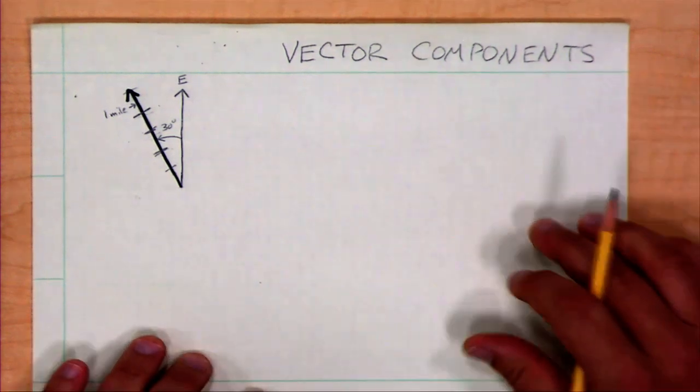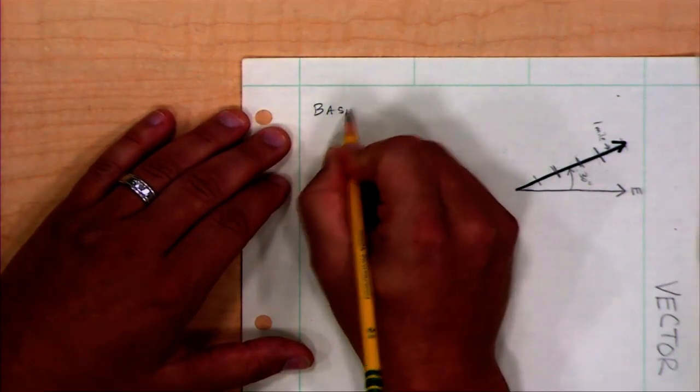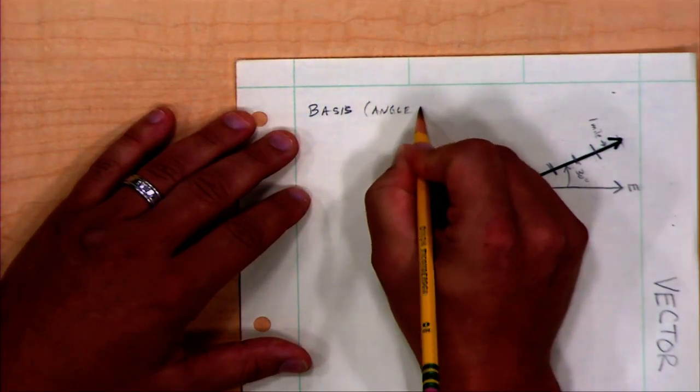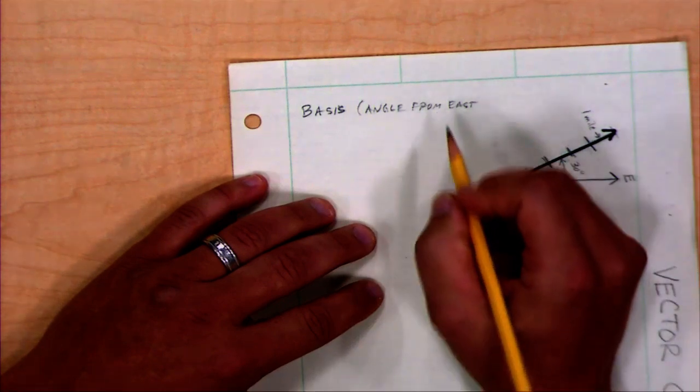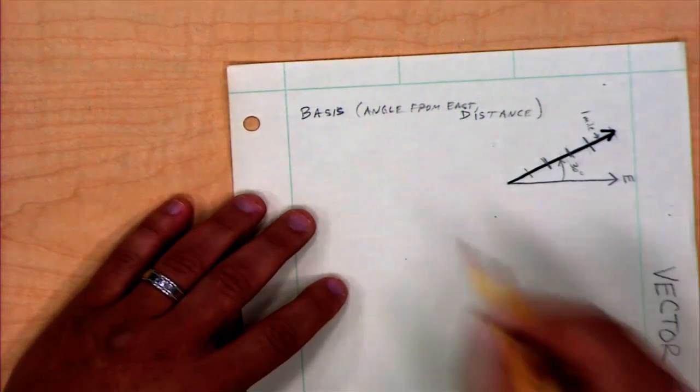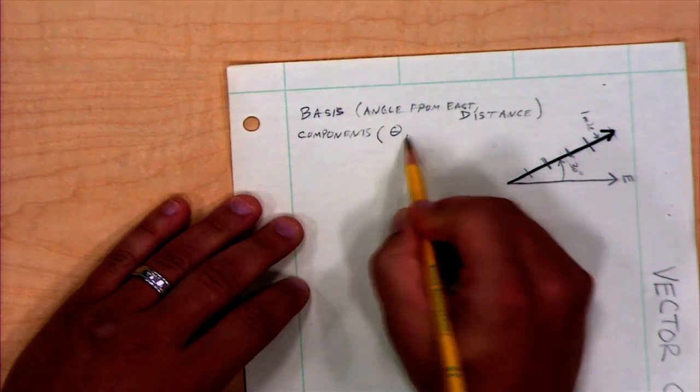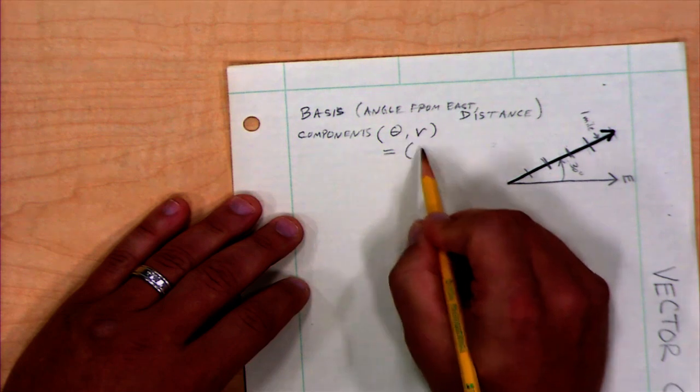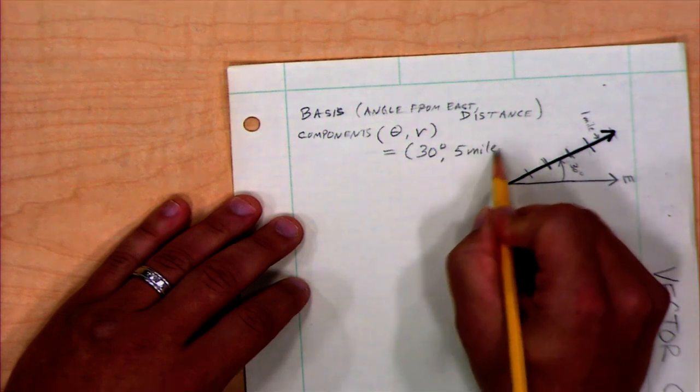Let's sort of reconsider this vector. I'm going to write down what the basis was. So my basis, in this case, was an angle from east, whatever we define as being east, and a distance. That was my basis. And my components ended up being some angle, and r we'll use as representing a radius or a distance. My components for this particular example were 30 degrees, angle from whatever I define as east, and 5 miles is my distance.